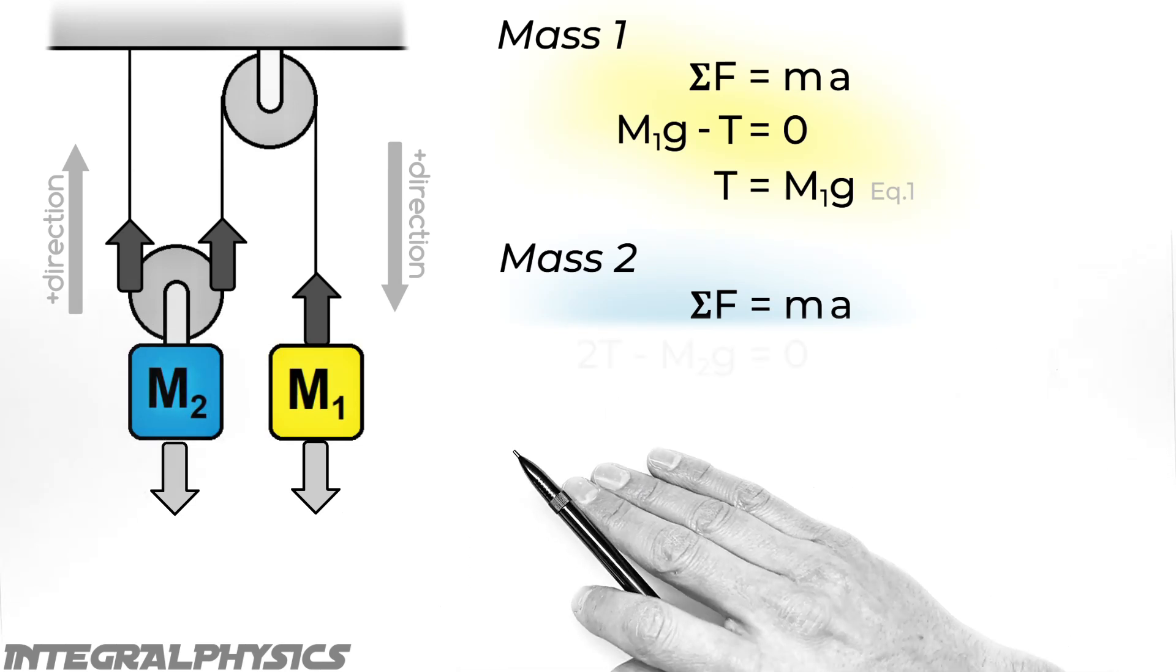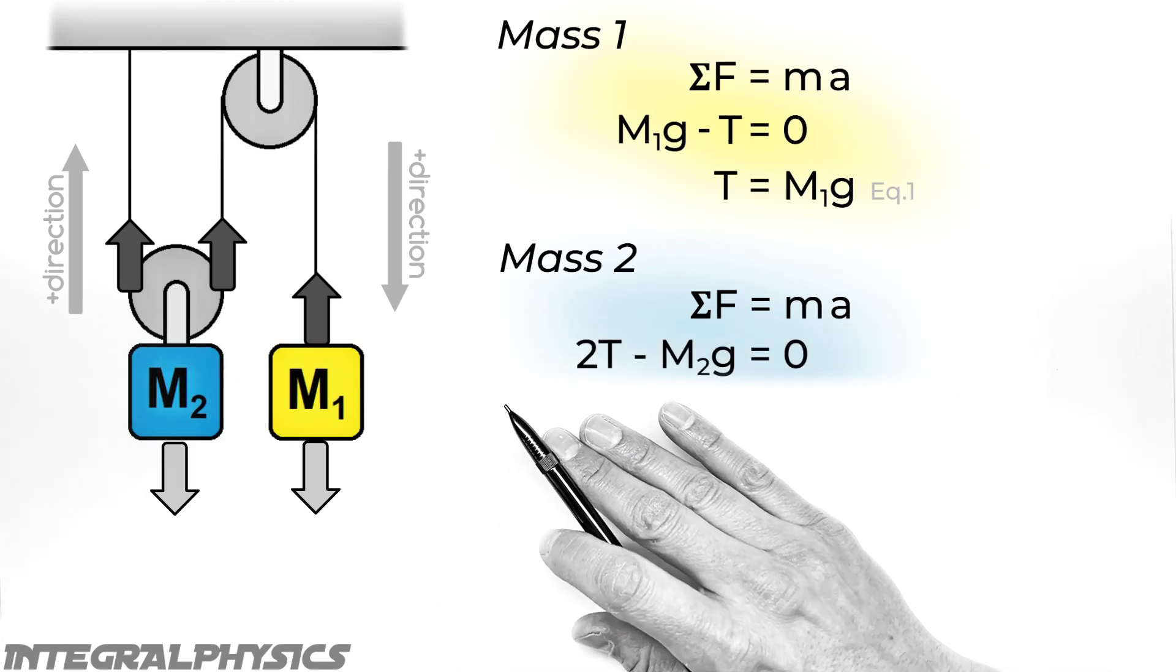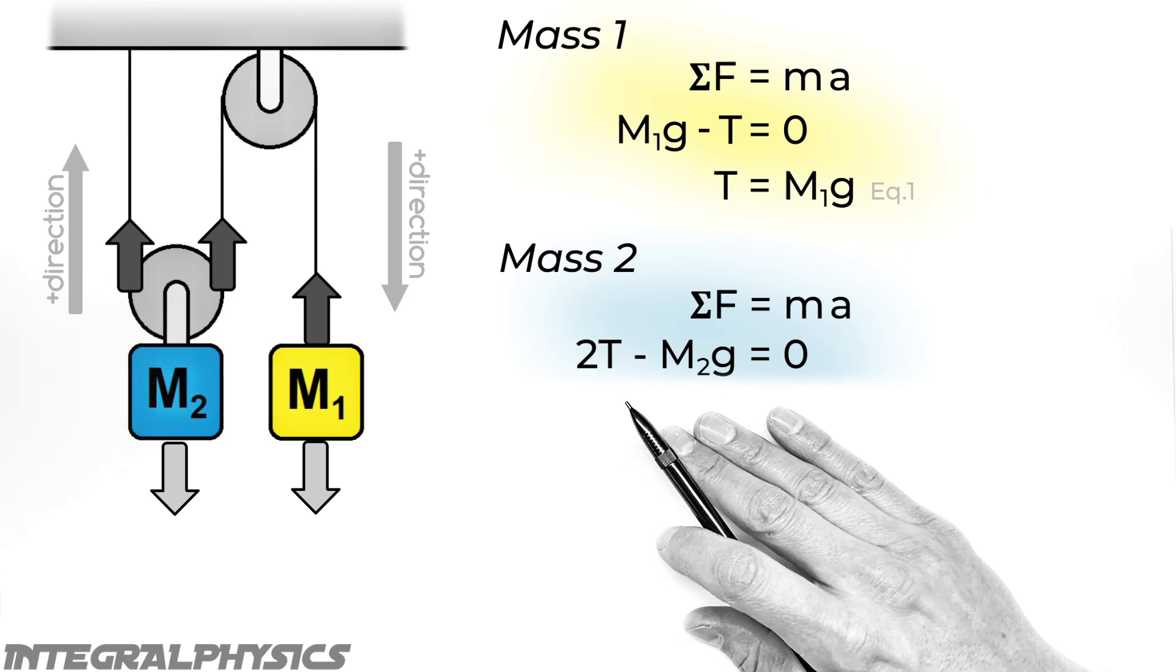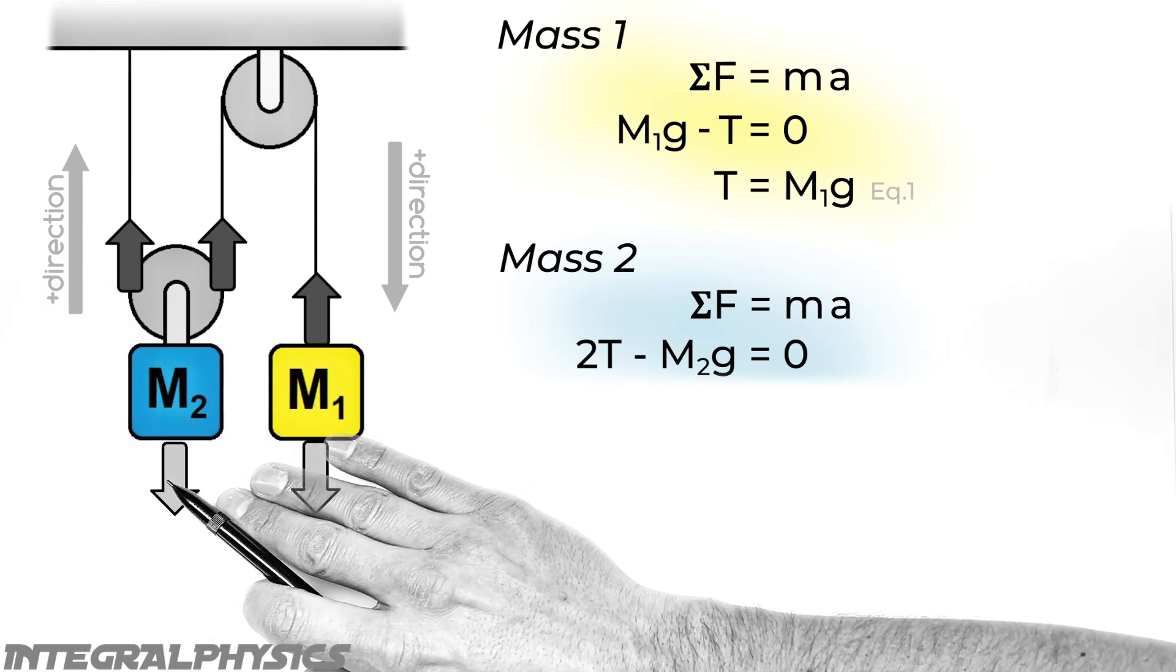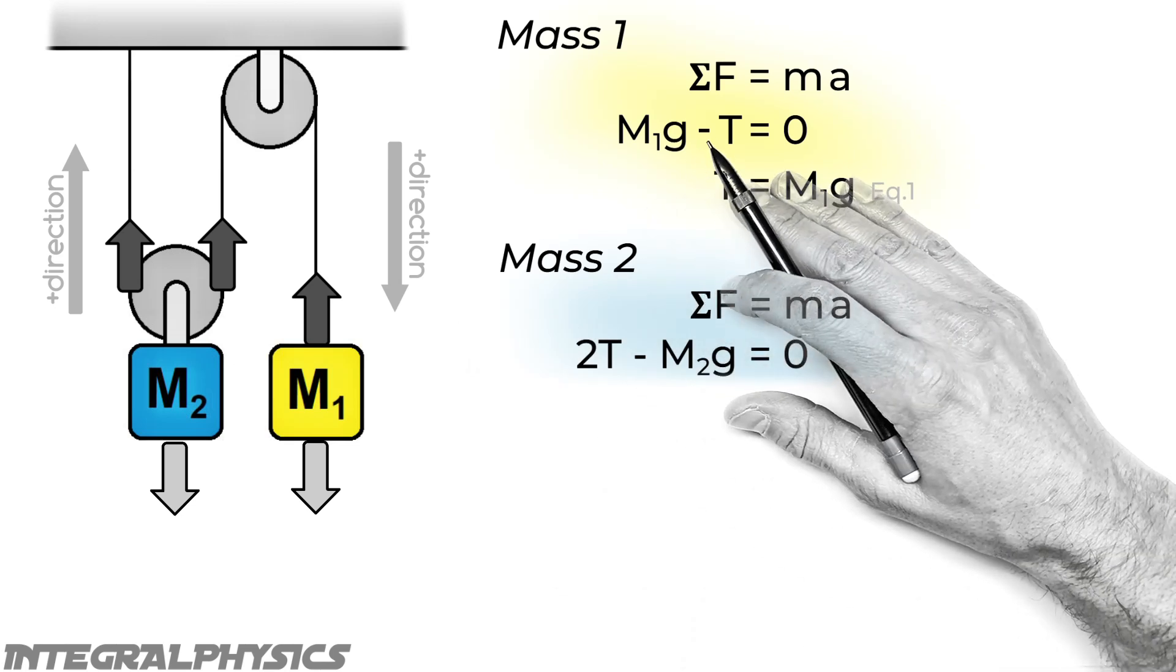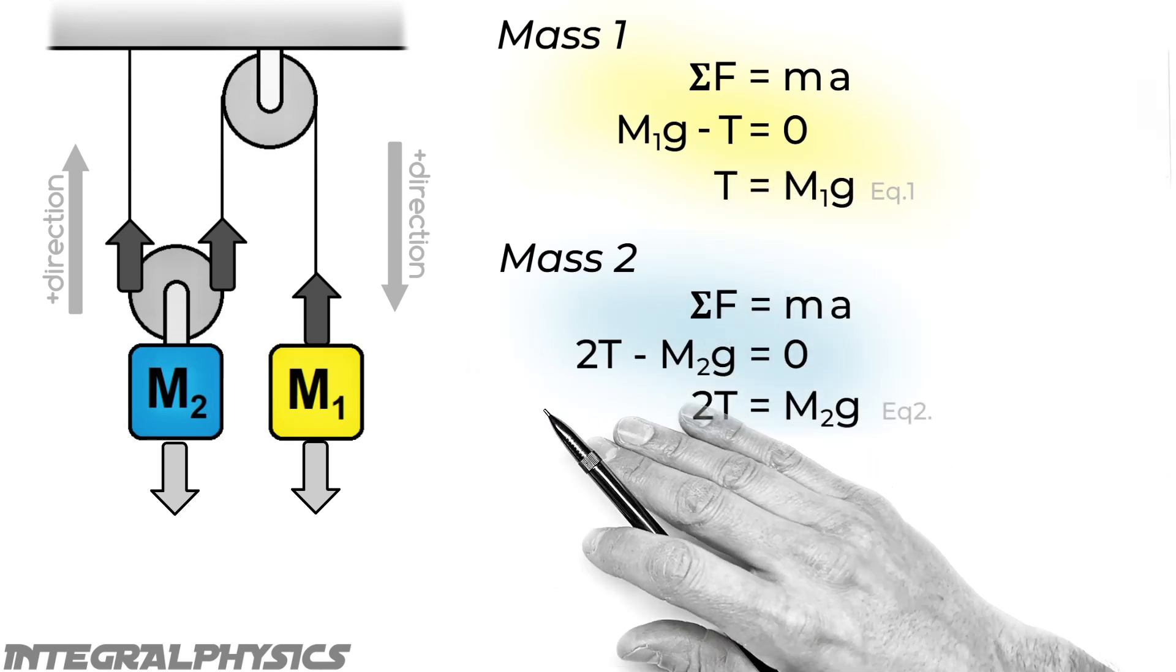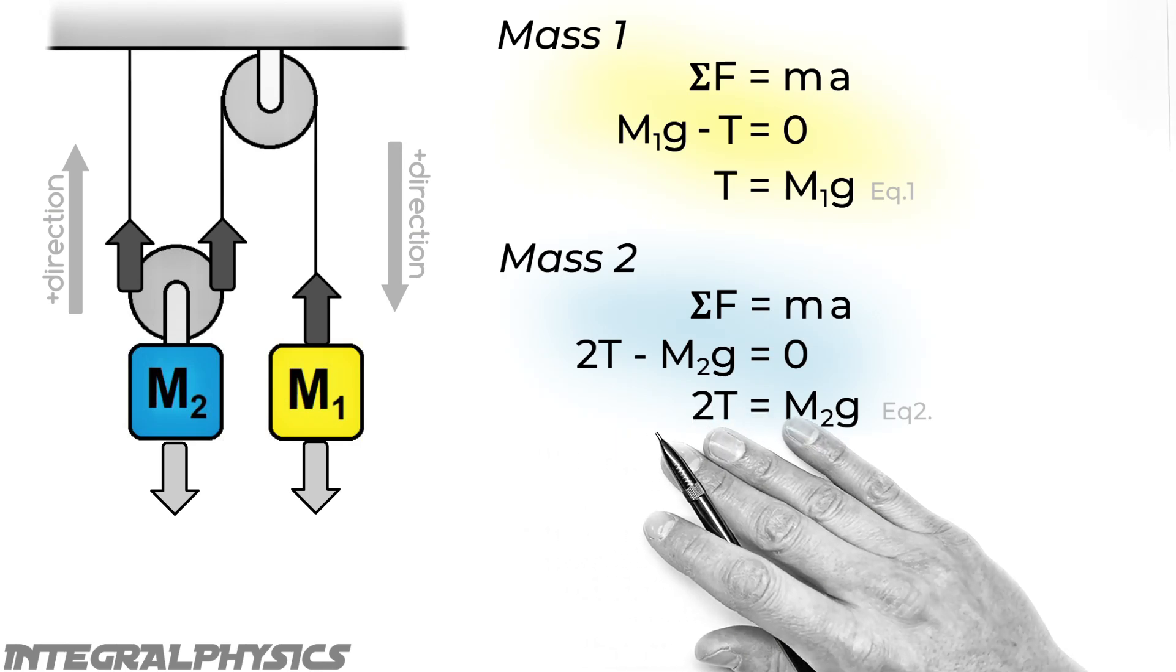So going to Newton's second law, we're going to set the sum of all forces, that is 2T upward minus M2G downward, equal to zero. Again, we want this block to remain in equilibrium. Now just like we did up here, we're going to rearrange this equation for T, or in this case, 2T, leaving us with 2T equals M2G.